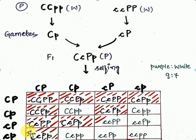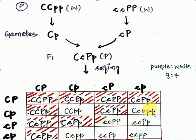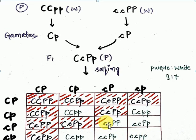Looking at the Punnett square results: wherever both C and P are dominant — whether homozygous dominant or heterozygous dominant — the color will be purple. However, wherever there is a homozygous recessive condition in either gene — small p small p, or small c small c, or small c small p — there will be no expression. Any combination showing even one recessive homozygous gene will be white.